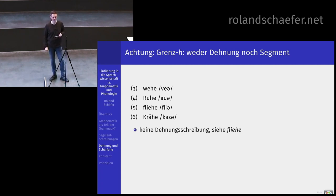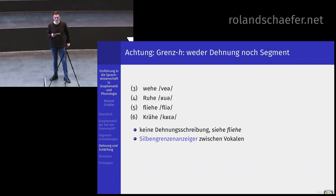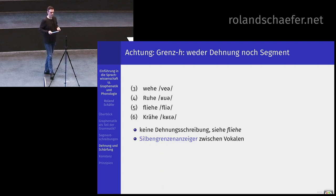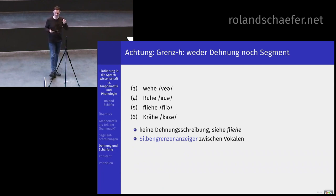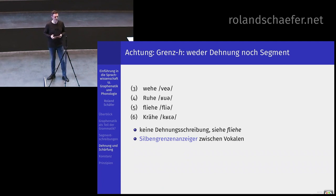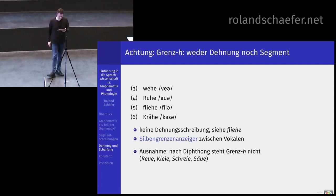Wenn Sie sich Wörter anschauen wie Wehe, Ruhe oder Fliehe – da ist kein H. Wenn Sie sagen, ich höre da aber eins, dann sage ich: das ganz viele Menschen immer wieder gemessen haben und da nie ein H ist. Da steht ein H, aber phonetisch und phonologisch ist keins. Das ist auch keine Dehnungsschreibung, weil dann hätten wir in Wörtern wie Fliehe plötzlich deren zwei: das Dehnungs-E und das Dehnungs-H. Was ist denn das dann? Das ist ein Silbengrenzenanzeiger zwischen Vokalen, wo aber kein Glottalplosiv kommen kann.